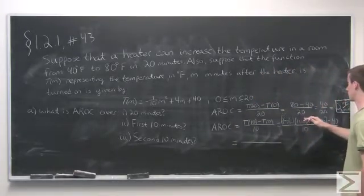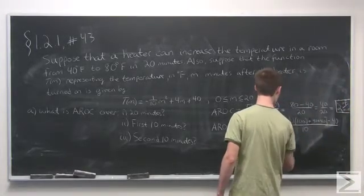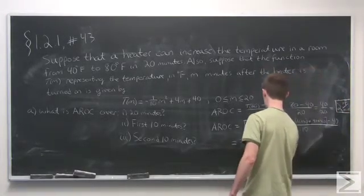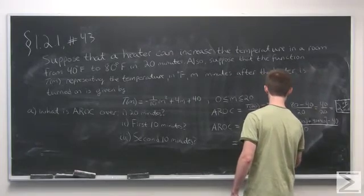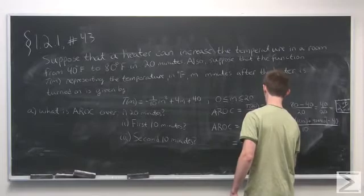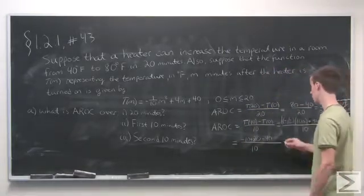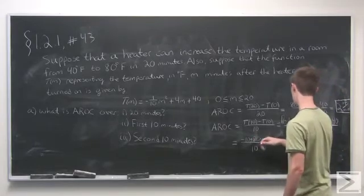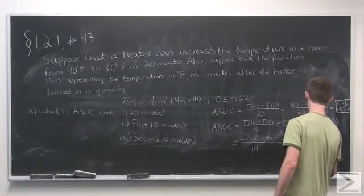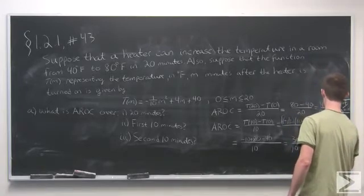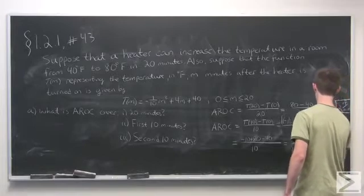we have -10 plus 80 minus 40, over 10, which works out to 30 over 10, or 3 degrees Fahrenheit per minute.